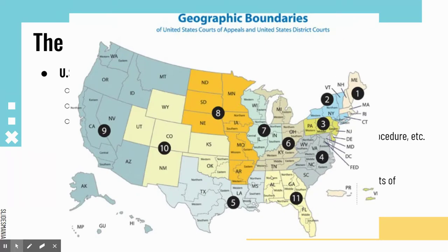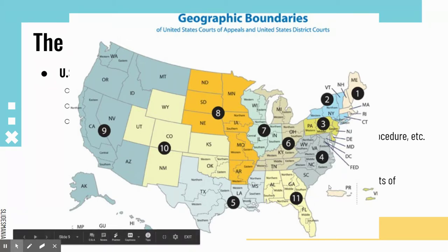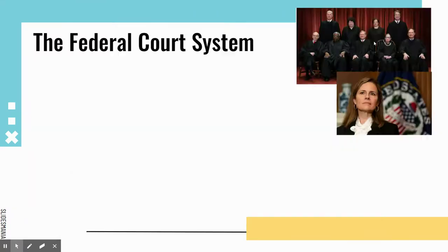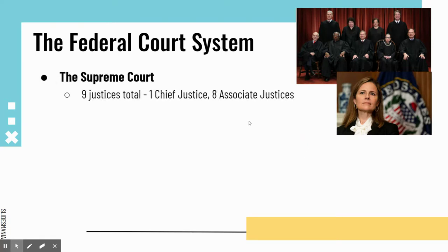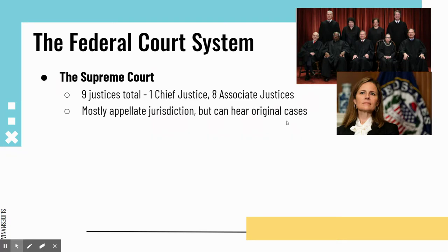Here is a map showing the courts and the circuits across the United States. We are in the Sixth Circuit here in Ohio. There are 11 circuits shown, but DC has two — one for DC itself and one for federal crimes. At the very top of the system is the Supreme Court, with nine total justices: one chief justice and eight associate justices. This court has mostly appellate jurisdiction, but they can hear original cases as well.